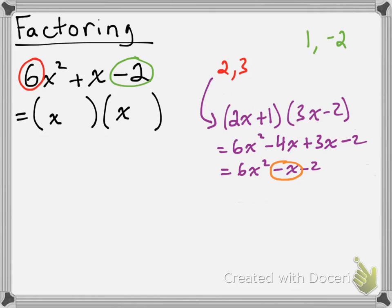But since the only difference is whether this is positive or negative, this is where we can deal with switching the positives and the negatives up top. So instead of doing 2x plus 1 and 3x minus 2, let's try 2x minus 1 and 3x plus 2.